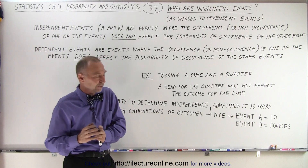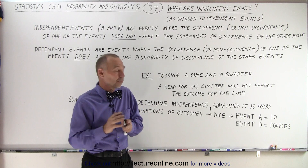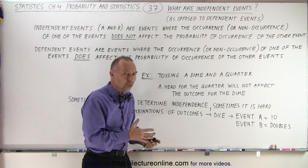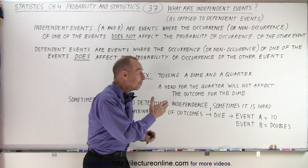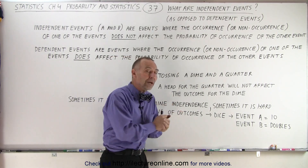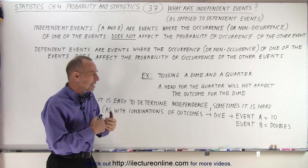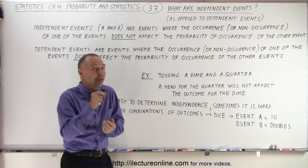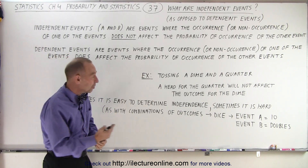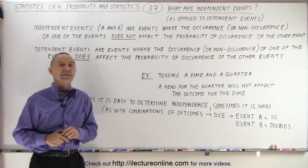It must be a five and a five. But if event A does not happen — we don't toss a 10, we toss a five, a four, a two, or a six — then the probability of event B happening is very different. If we don't toss a 10, there are multiple ways in which we can still get doubles. So you can see that the probability of event B does depend upon what happened to A. Those two events are dependent on one another because that involves a combination of outcomes.